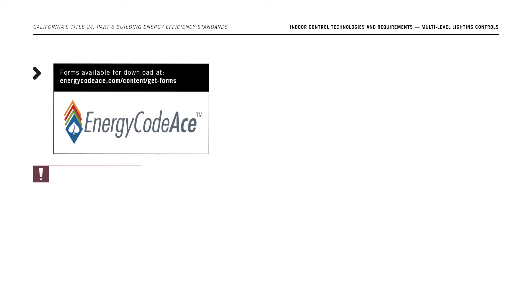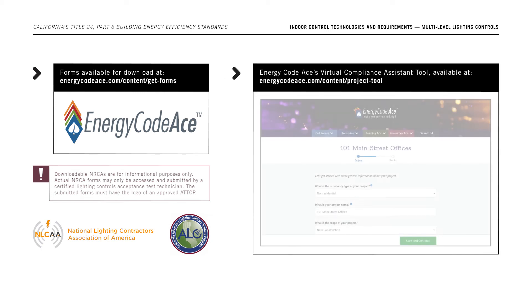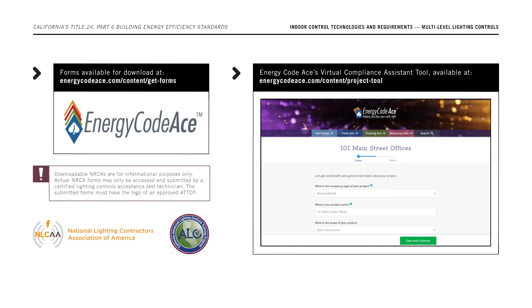All forms are available for download as PDFs on energycodeace.com. Acceptance test forms are provided for informational purposes only. Actual NRCA forms may only be submitted by a Certified Lighting Controls Acceptance Test Technician, and the forms must have the logo of an Approved Acceptance Test Technician Certification Provider, or ATTCP. Additionally, you can access Energy Code Ace's Virtual Compliance Assistant Tool at energycodeace.com/content/project-tool, which is available to help you fill out the Certificates of Compliance.